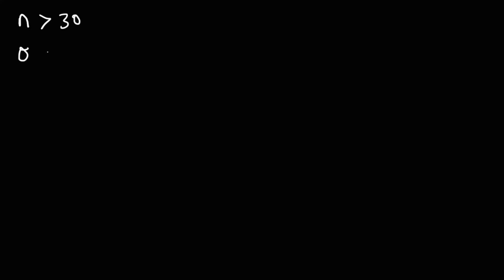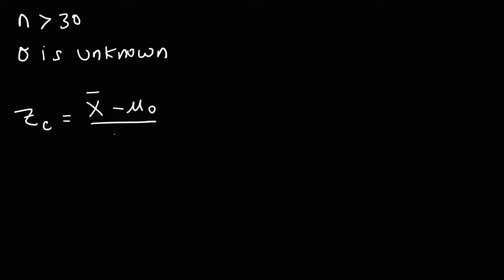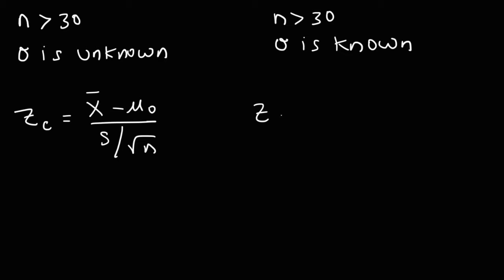Now, let's say that N is greater than 30 and the population standard deviation is unknown. Because the sample size is large, the distribution will be similar to a normal distribution, so we can calculate the Z value. It's going to be the sample mean minus the population mean divided by the sample standard deviation over the square root of N. If N is large and we know the population standard deviation, everything is the same — instead of using S, we use sigma.